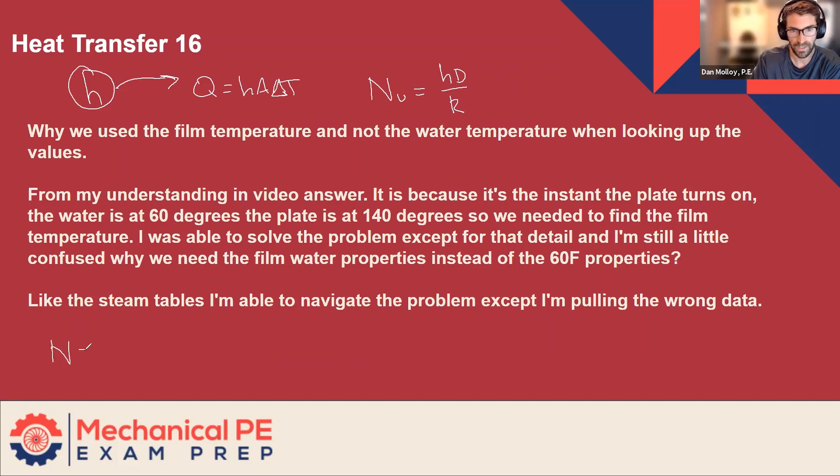And then how do you find the Nusselt number? Well, the Nusselt number is going to be a function of the Rayleigh number, and how do you find the Rayleigh number? That's going to be a function of a bunch of different properties of water, such as the volumetric coefficient of thermal expansion, the kinematic viscosity, and the Prandtl number. Now, some of these numbers might be given, or they might give you a table to look it up.